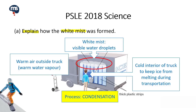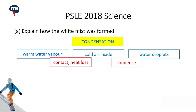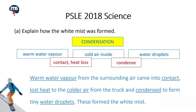Condensation refers to the change from gas to liquid. Let us take a look at the answer. Warm water vapour from the surrounding air came into contact, lost heat to the colder air from the truck and condensed to form tiny water droplets. These formed the white mist.